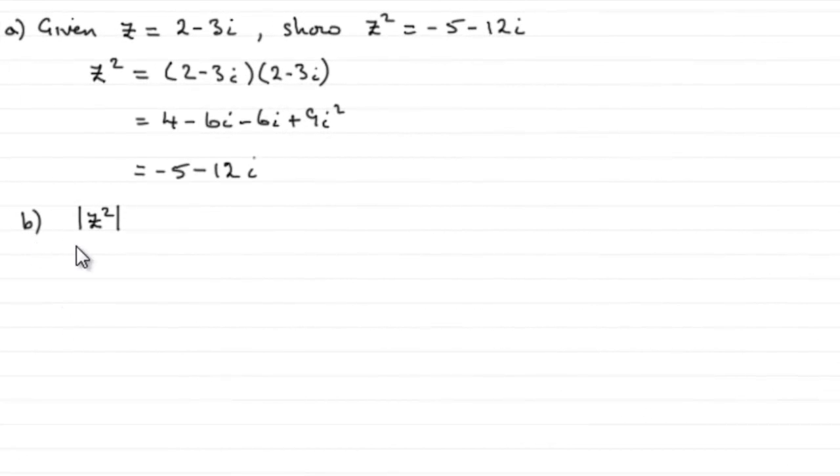Now for part b, we've got to work out the mod of z squared. Very easy. All we've got to do is simply use Pythagoras' theorem.